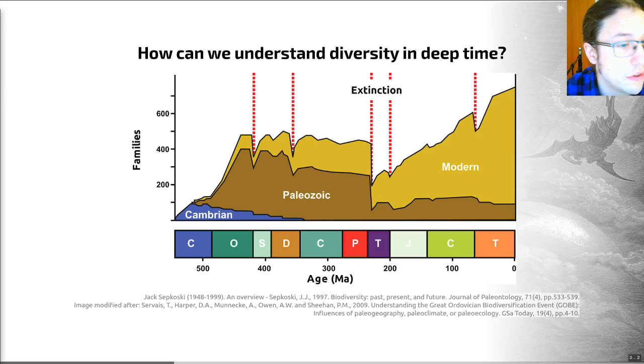So Sapkowski, when he first did this, identified three different major faunas: the Cambrian fauna, that then struggled on and died out in the Devonian Carboniferous, the Paleozoic fauna, and then the modern fauna. So all of this was done by looking at what families, what groups were in the fossil record, counting those up, identifying which one of these faunas they belong to, and then plotting that on a graph.